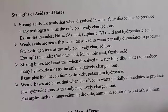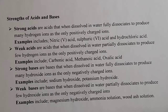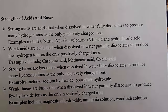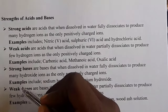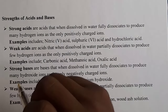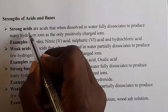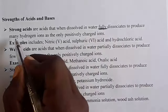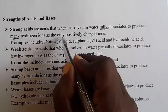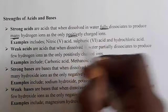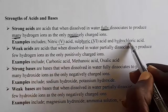Now let's look at the strength of acids and bases. What is a strong acid? Strong acids are acids that, when dissolved in water, fully dissociate to produce many hydrogen ions as the only positively charged ions. Examples include nitric acid, sulfuric acid, and hydrochloric acid.